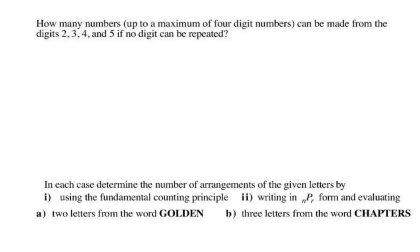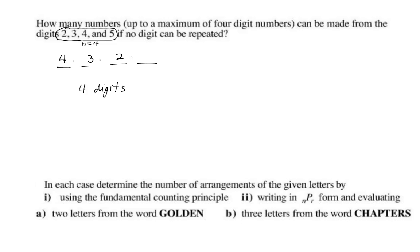How many numbers can be made from the digits 2, 3, 4, and 5 if no digit can be repeated? For four-digit numbers, there are four blanks to fill. How many choices for the first blank? Four. Then three, then two, then one. That gives 4 times 3 times 2 times 1 — those are the four-digit numbers.